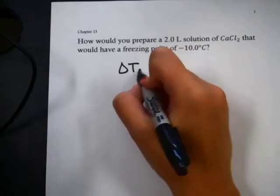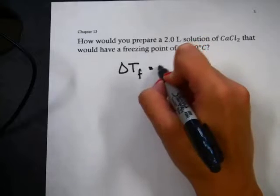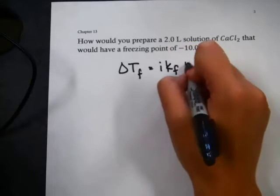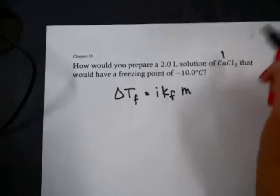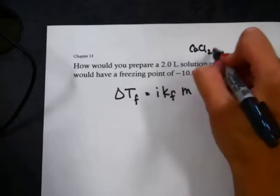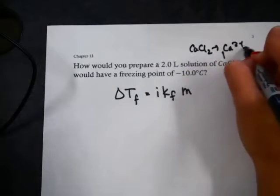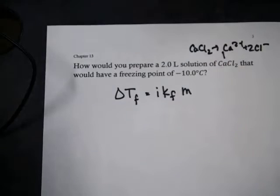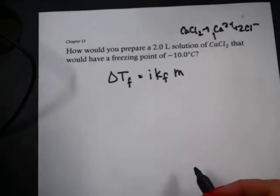The equation is delta Tf, the change in freezing point, equals I times Kf times molality. Calcium chloride would separate into calcium 2+ ions and 2 chloride minus ions, so that's 3 total particles, so my I would equal 3.